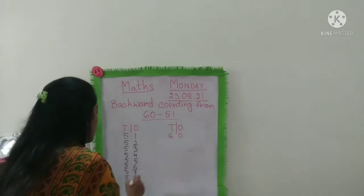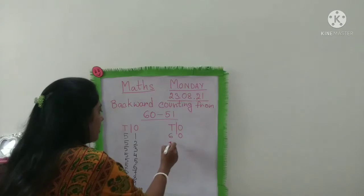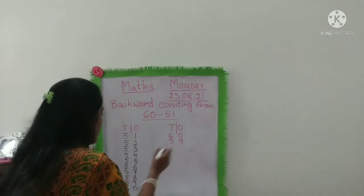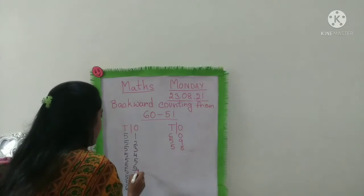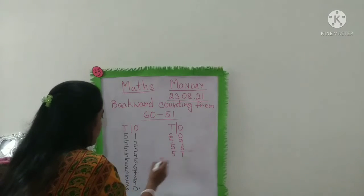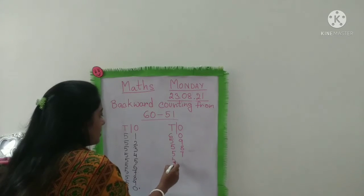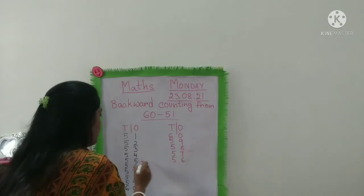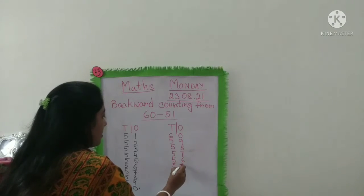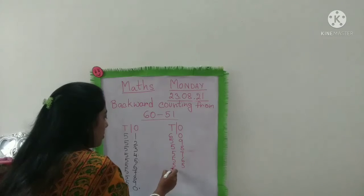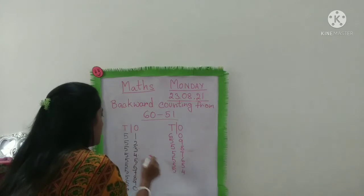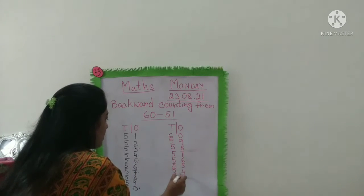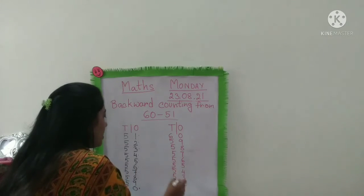60. Then next number is 59, 58, 57, 56, 55, 54. Next number is 53, then 52, next number is 51.